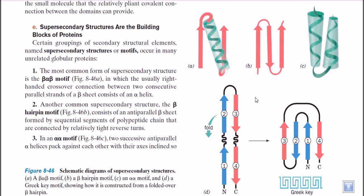These motifs are really important because the type of arrangement tells us what the function of a protein will be. The interaction between these motifs involves hydrophobic interactions, electrostatic interactions, salt bridge interactions, disulfide linkages, London dispersive forces, and van der Waals interactions, all of which play a very important role in making these motifs. These motifs are called super secondary structures.